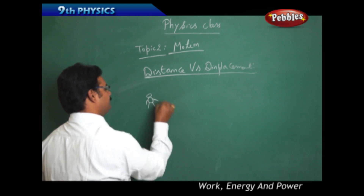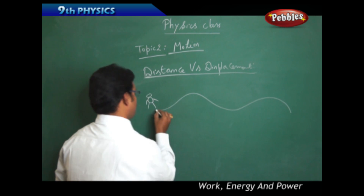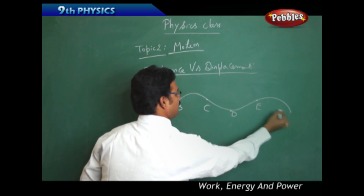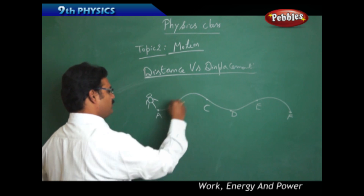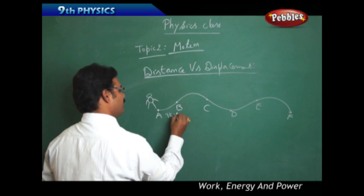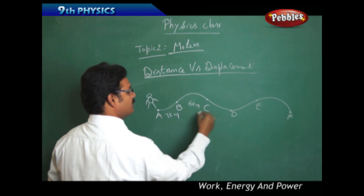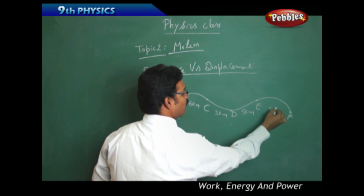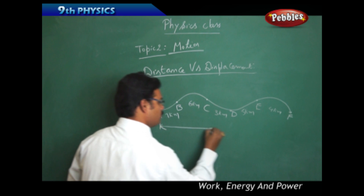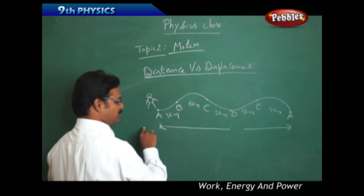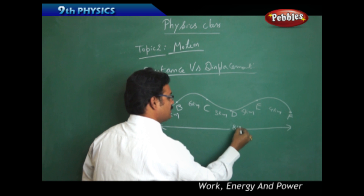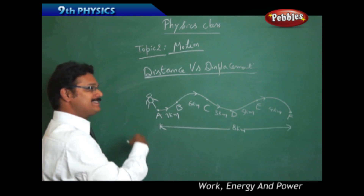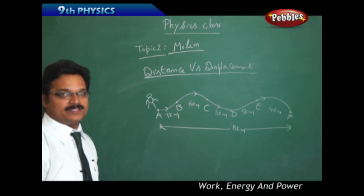A person is moving along a path starting from point A, then B, C, D, E, and F. From A to B it is 7 km, B to C is 6 km, C to D is 3 km, D to E is 5 km, and E to F is 4 km. But if the person goes directly from A to F, the distance is 8 km.